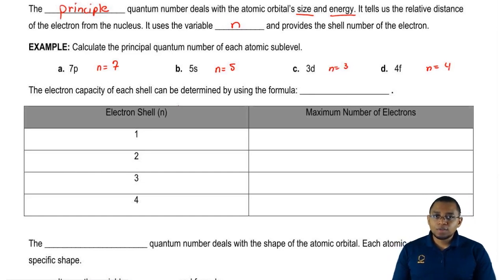Just remember, the number that goes in front of the sublevel letter represents our principal quantum number. It's as easy as that. Now, we're going to say that the electron capacity of each shell can be determined by using the formula 2n squared, where n represents the shell number.